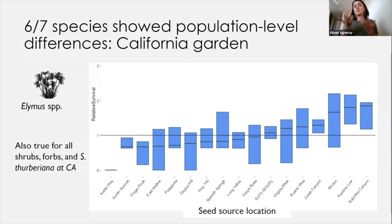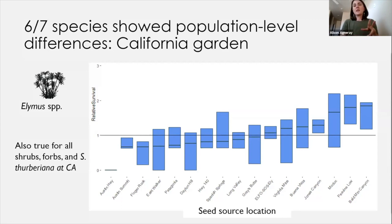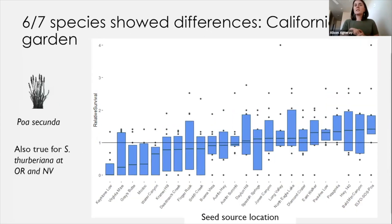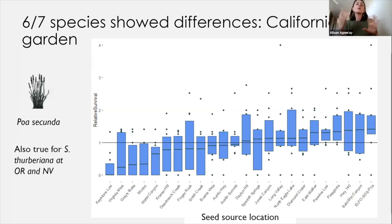The answer to our question was yes, there is variation in survival. These results were replicated for all the shrubs, forbs, and the Stipa species in California. One species, Poa secunda, was the only one that didn't show significant variation in survival based on where the plants came from, though a few seed sources did seem mostly above or below average. The Stipa also had the same null response at two gardens. But all of this work led us to wonder for our next question.